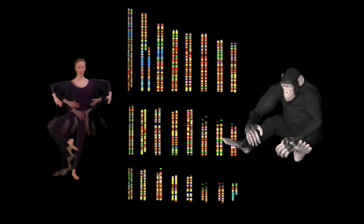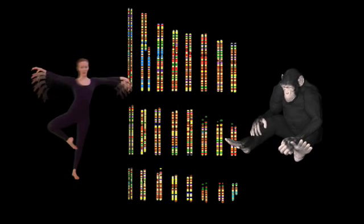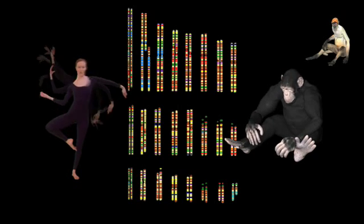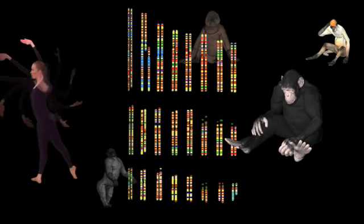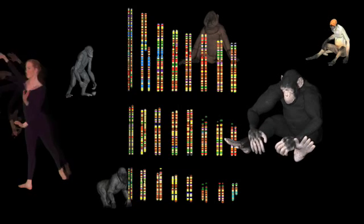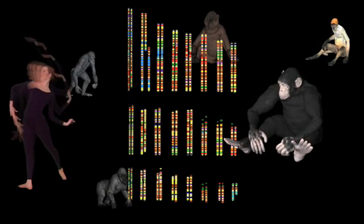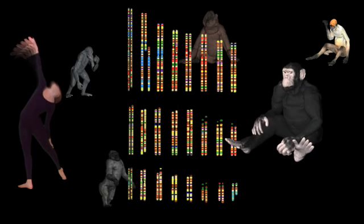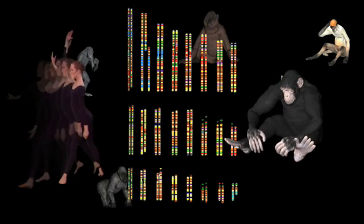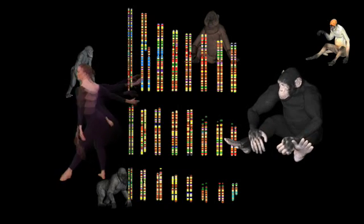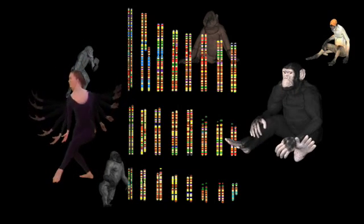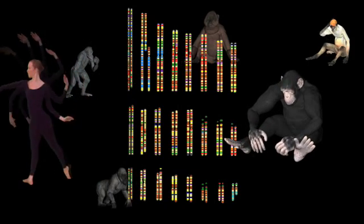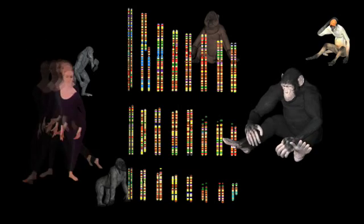There are very many examples of pseudogenes shared between primates and humans. One is the Psi-Ada globin gene, a hemoglobin pseudogene. It is not shared by all mammals, only the primates. And in primates it is found in the exact same chromosomal location with the same mutations that destroyed its ability to function.